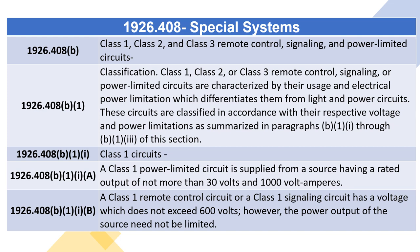1926.408(B)(1)(i) — Class I Circuits. (A) A Class I Power Limited Circuit is supplied from a source having a rated output of not more than 30 volts and 1,000 volt-amperes. (B) A Class I Remote Control Circuit or a Class I Signaling Circuit has a voltage which does not exceed 600 volts; however, the power output of the source need not be limited.